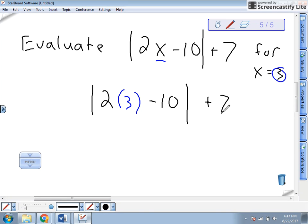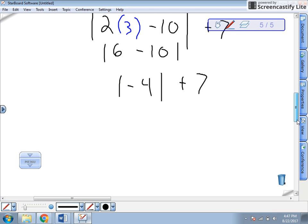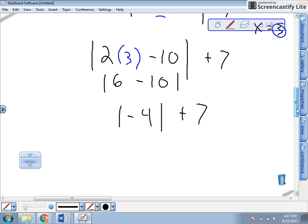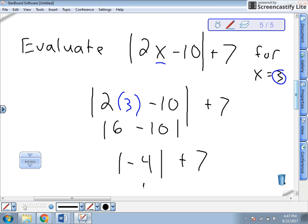Follows the order of operations inside the absolute value. 2 times 3 is 6 minus 10. Well, 6 minus 10 is negative 4. Absolute value of negative 4 plus 7. Well, we know that the absolute value of negative 4 is positive 4 plus 7. So our final answer equals 11.